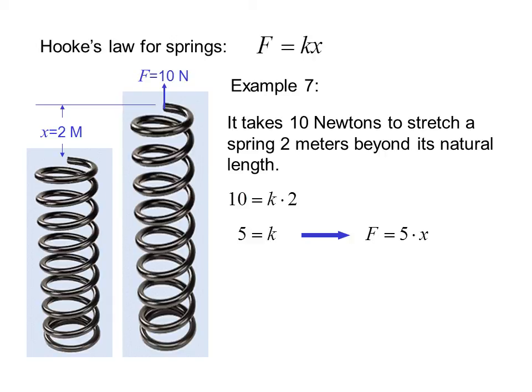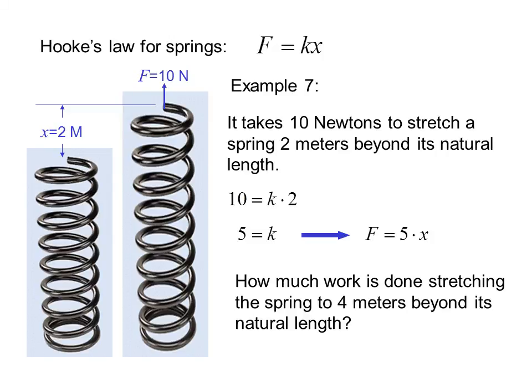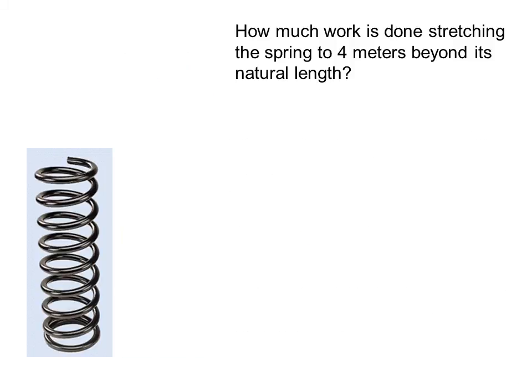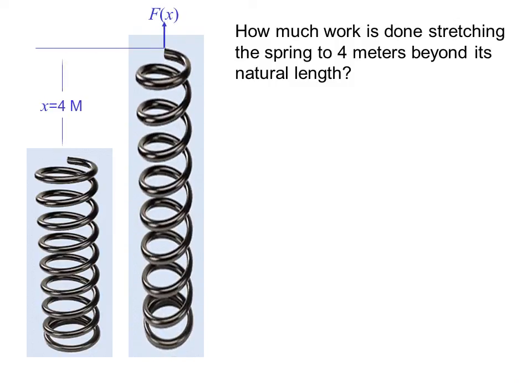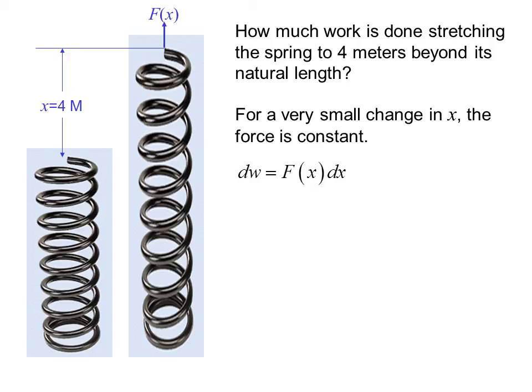How much work is done stretching this spring to 4 meters beyond its natural length? For a very small change in x, the force is constant. So our very small amount of work is f(x) dx, that is the force at that particular distance times the very small change in distance. But we know f(x) is 5x, so now we have dw = 5x dx.